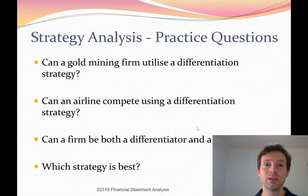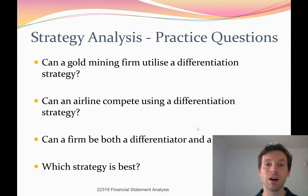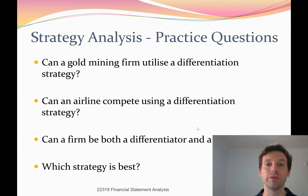So finally, which strategy is best? There's no best strategy. There are some very successful companies in the world that are differentiators, and some very successful companies that are cost leaders — it's all about what works in your particular industry with your product. A cost leader like McDonald's is a multi-billion dollar company providing cheap food to people around the world very successfully. A differentiated product like Apple is the most successful business in the world, having been over a trillion dollars in market capitalization. Both strategies can be very successful. It's a matter of implementing the strategy successfully and constantly improving on it.